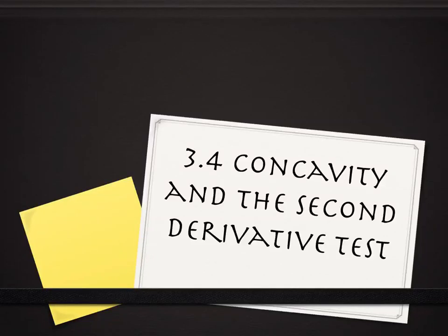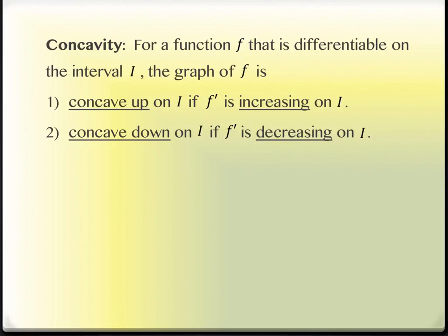Section 3.4 — we're going to be taking a look at concavity and the second derivative test. You do know a bit about concavity because you've been in algebra. Concavity is usually brought up for the first time in an Algebra 2 class, maybe even touched upon in an Algebra 1 class. Certainly, if you've taken college algebra or pre-calc, you saw it again there, and we're going to look at it again here. We're going to define it a little differently, but I'll show you how it makes sense in terms of what you've seen before.